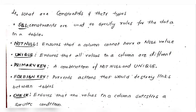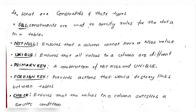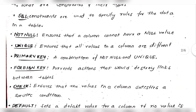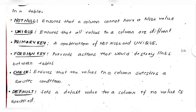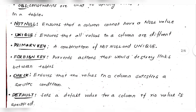Next question: what are SQL constraints and their types? SQL constraints are used to specify rules for the data in a table. The most popular constraints are: NOT NULL, UNIQUE, PRIMARY KEY, FOREIGN KEY, CHECK, and DEFAULT.